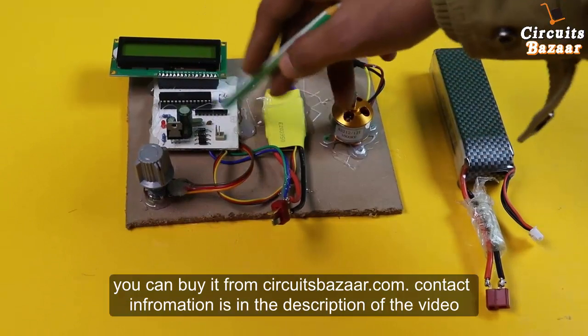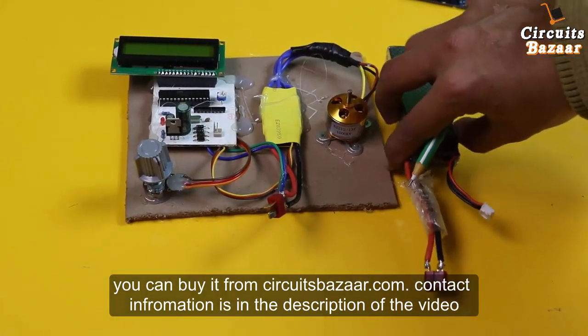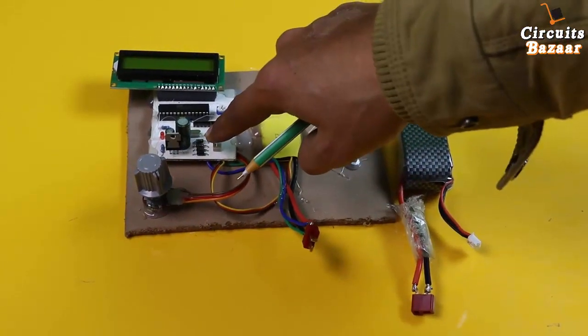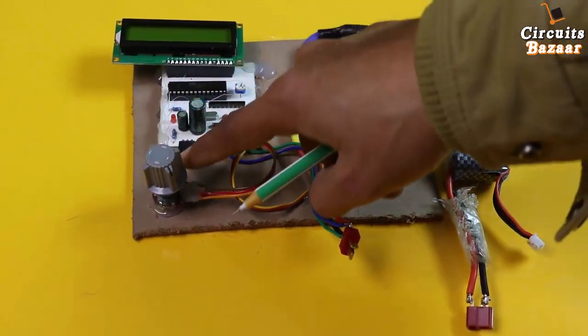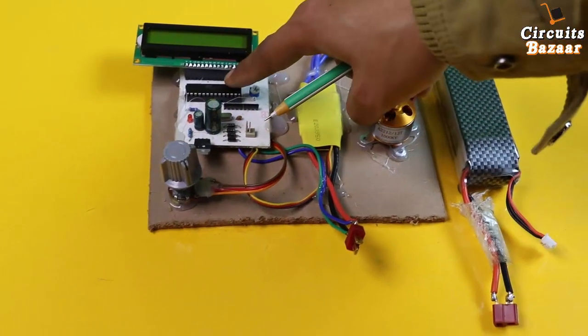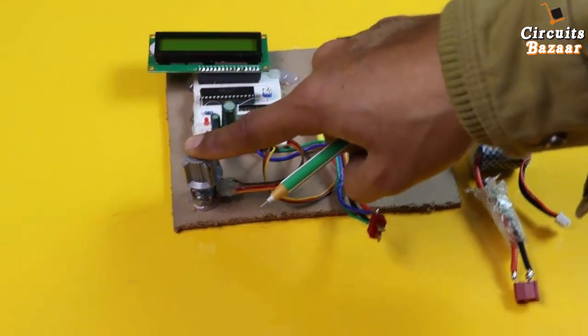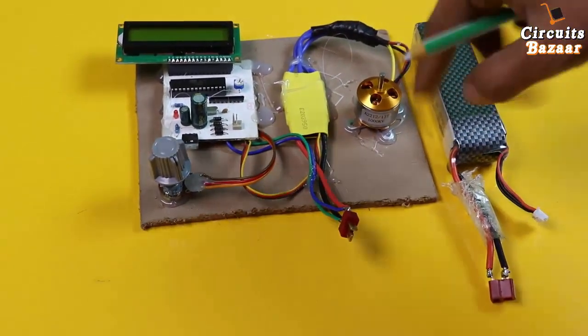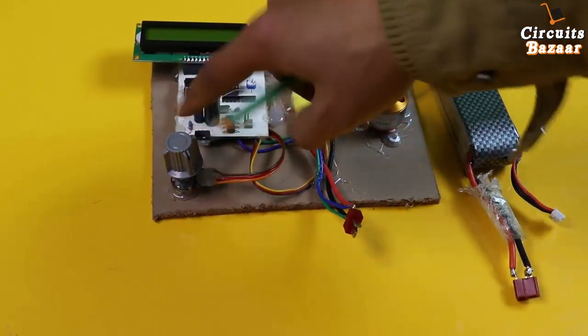This is the power supply section. We've taken power from the LiPo battery, but if you don't have a LiPo battery, you can use a high current transformer. This is the rectifier, then the filter circuit, and this is the 7805. Even if you're running on LiPo battery, the microcontroller works on 5V, LCD works on 5V, potentiometer works on 5V. That's why you need the 7805 voltage regulator to convert the high voltage, approximately 11V from the LiPo battery, into 5V.